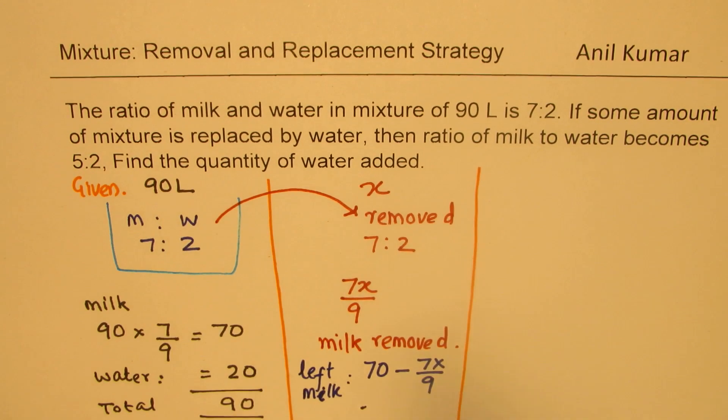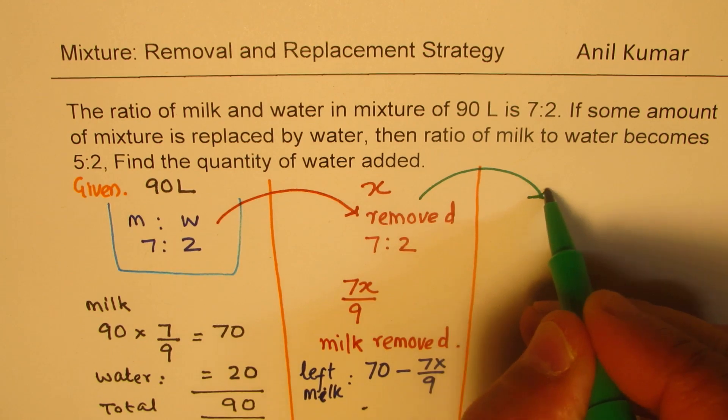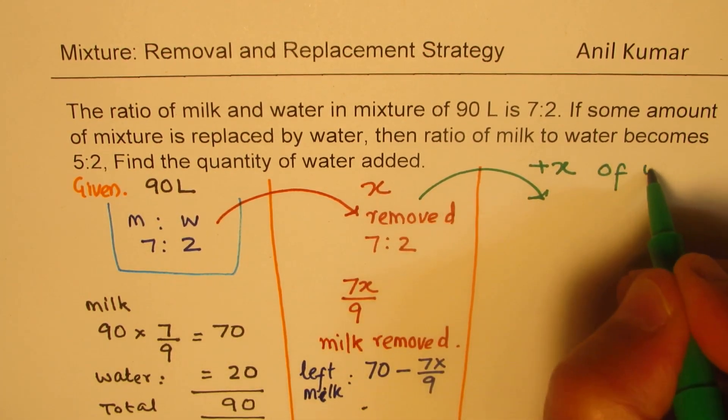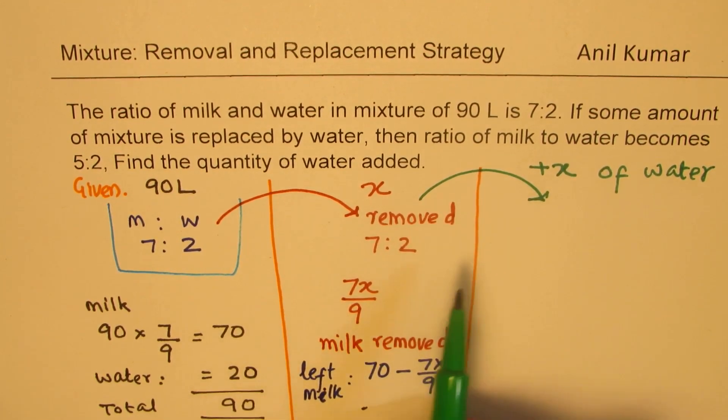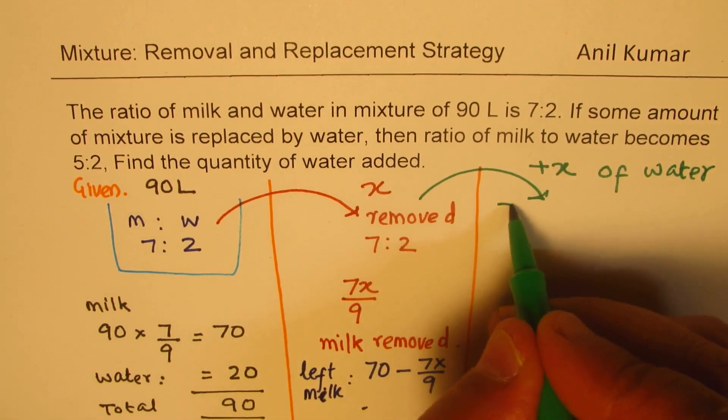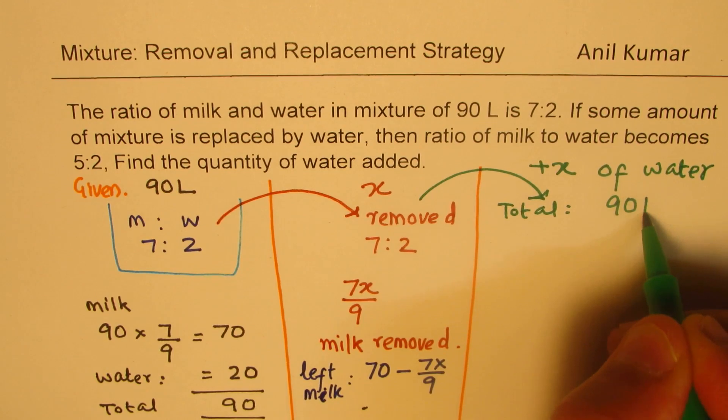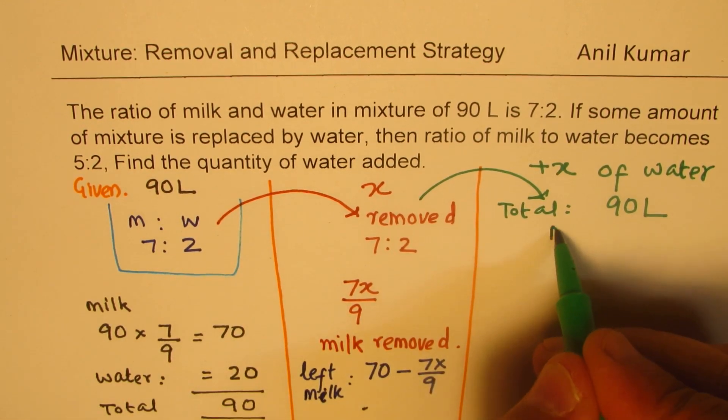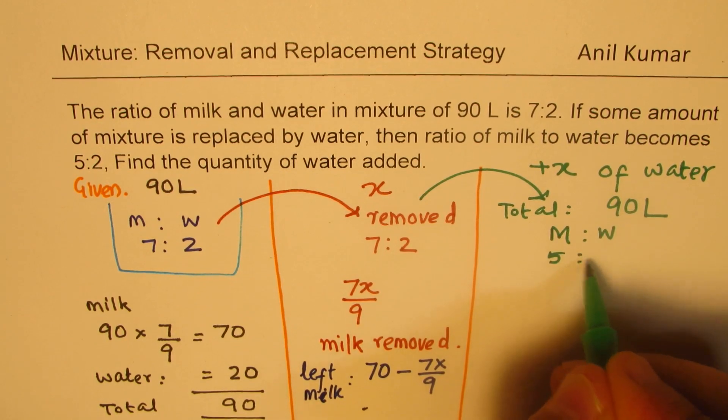Now, what we have done in the next stage is we have added x quantity, the same quantity of water. Now if we do that, then the total quantity will be back to 90 litres. However, since we added additional water, the ratio of milk to water changed to 5:2.